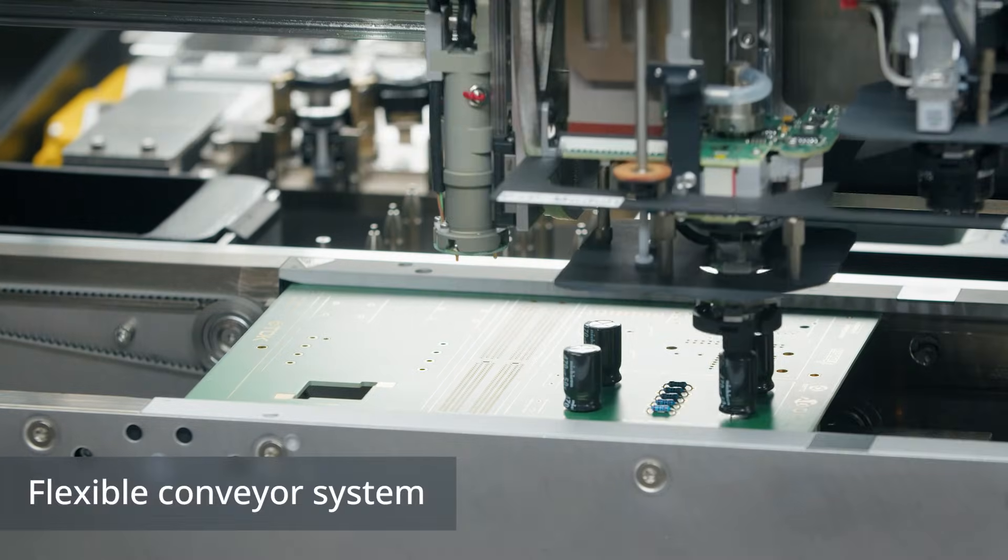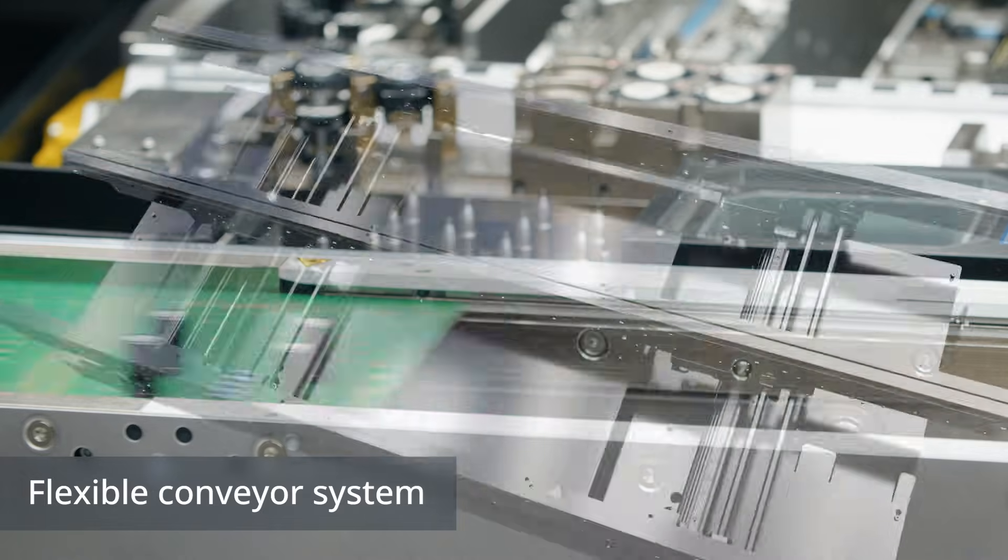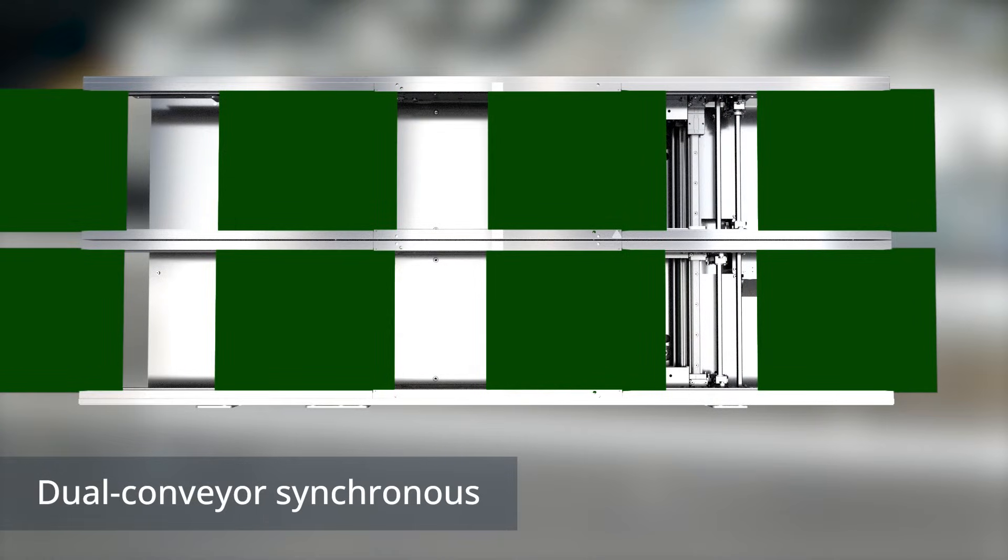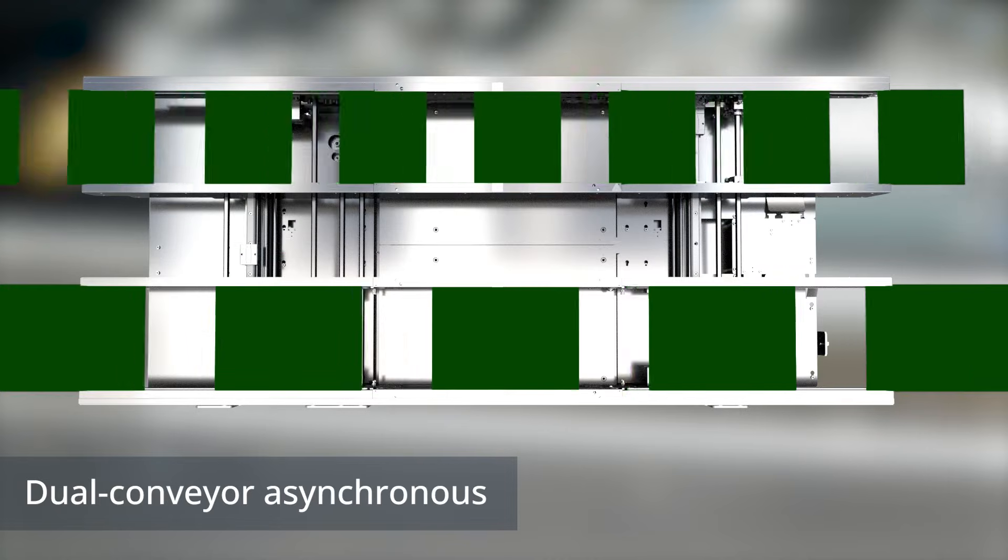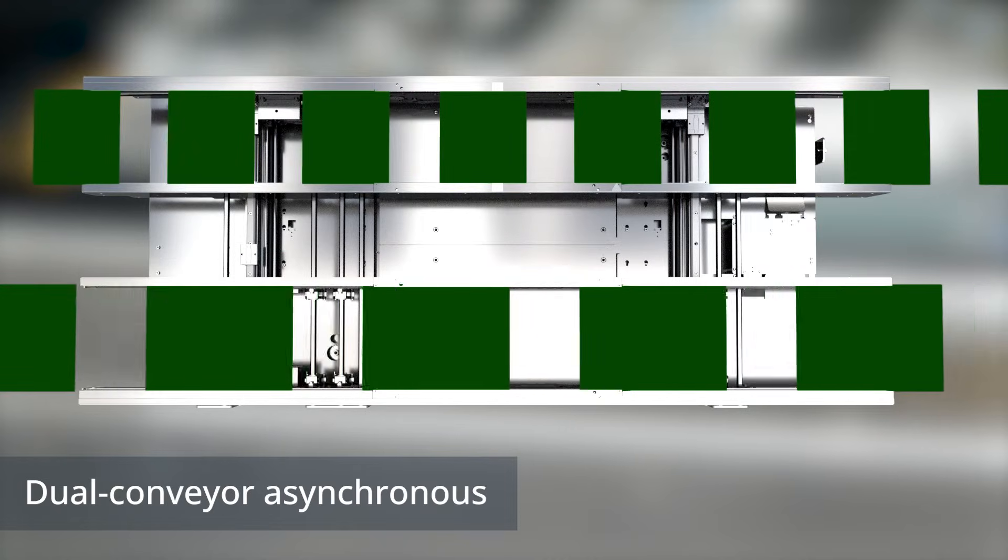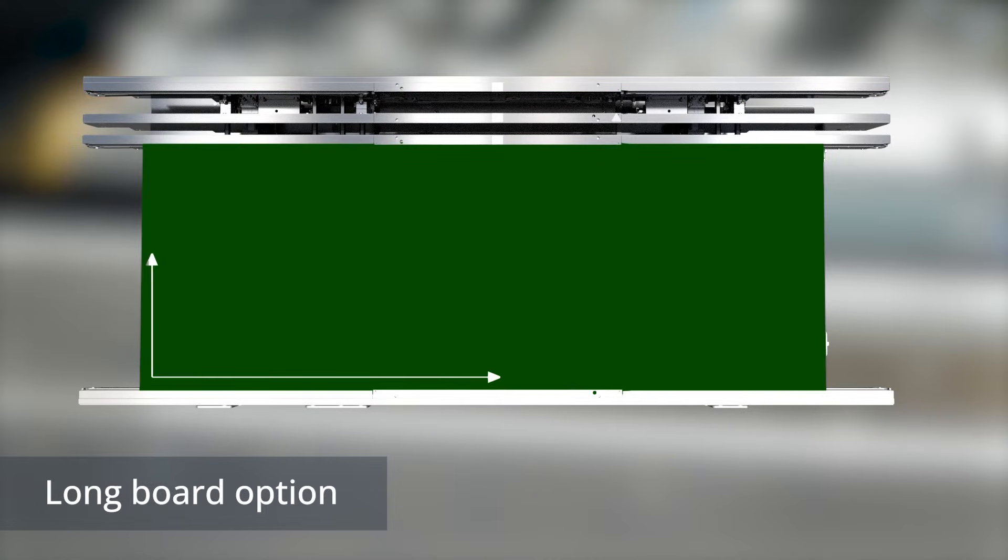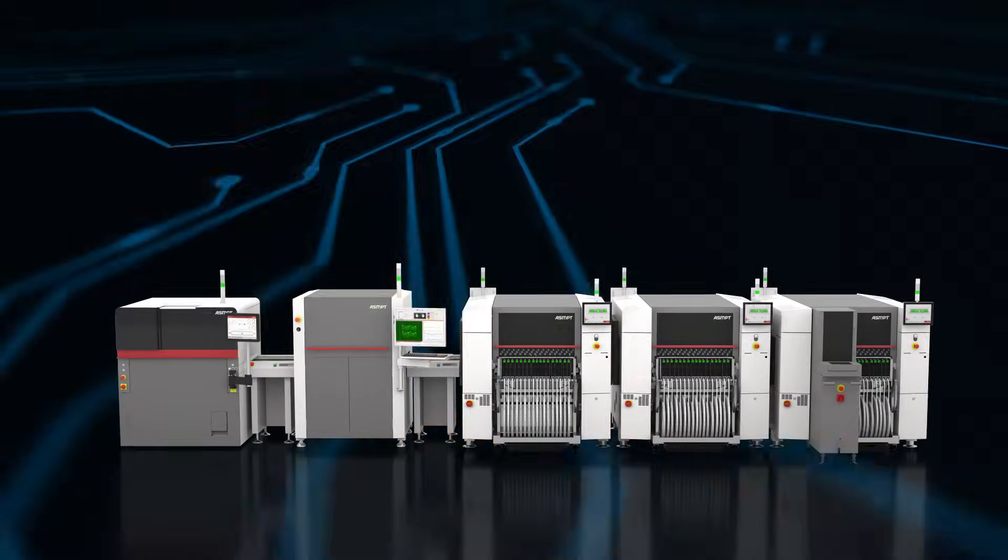The C Place SX conveyor system offers maximum throughput for nearly any kind of product: single or dual conveyors, highly effective placement modes with separate tracks, or the long board option for PCBs up to 1525 by 560 millimeters.